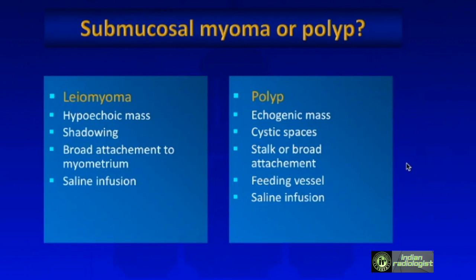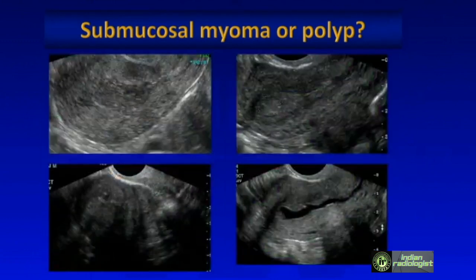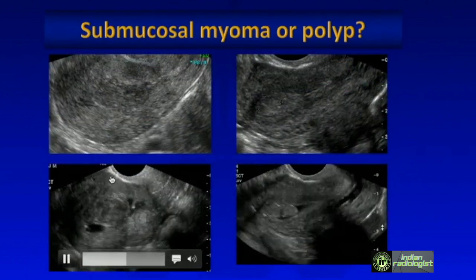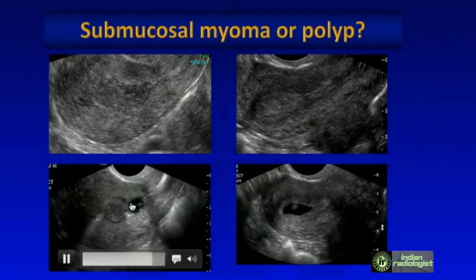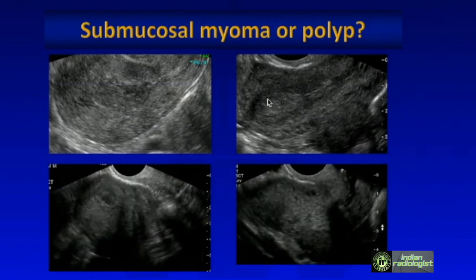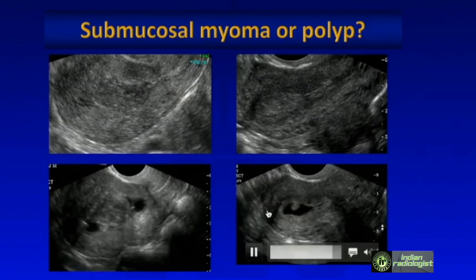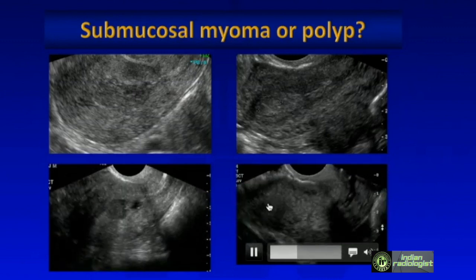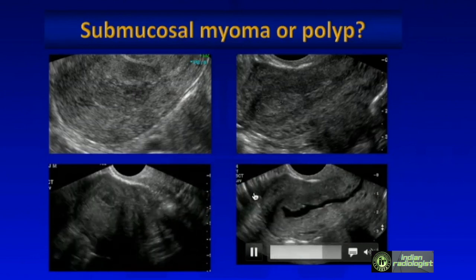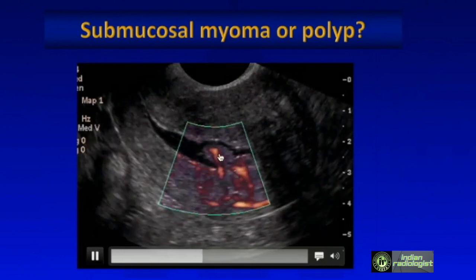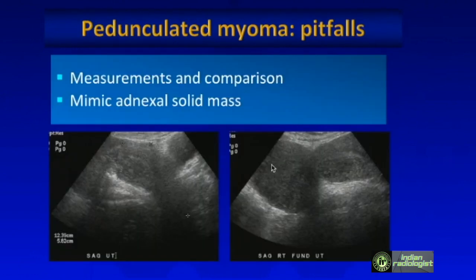The other dilemma: is that a submucosal myoma or a polyp? Myomas tend to be hypoechoic, may have shadowing, and tend to have a broad attachment to the uterus. Endometrial polyps tend to be more echogenic, may have cystic spaces, can have a stalk or broad attachment, and often have a feeding vessel. Saline infusion sonography is very helpful. Here a submucosal leiomyoma has a broad attachment and is hypoechoic with shadowing, versus a polyp with a narrow attachment, cystic spaces, and a feeding vessel on color Doppler.